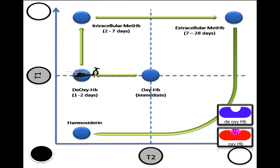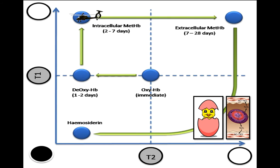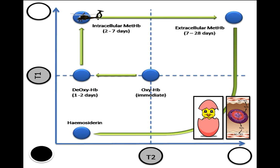Deoxyhemoglobin will be hypointense in T2 but isointense in T1. Methemoglobin lies inside the cell, so the external magnetic field cannot influence it as much — it will remain hypointense in T2 but will be hyperintense in T1. After some time, the methemoglobin will be released from the cell into the extracellular space and will be more influenced by the external magnetic field.